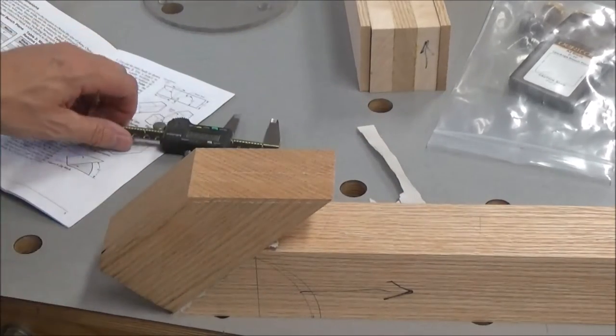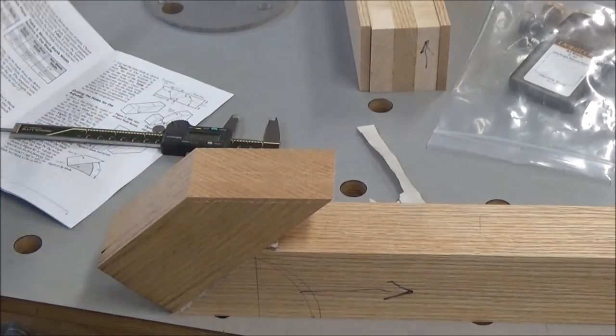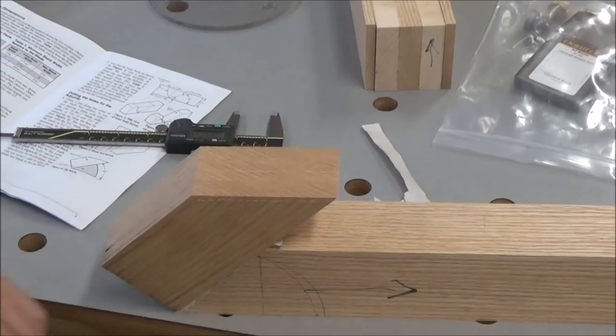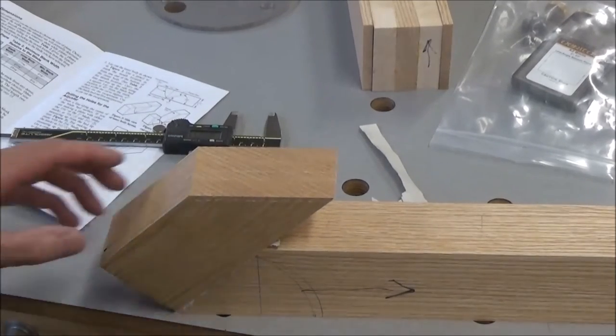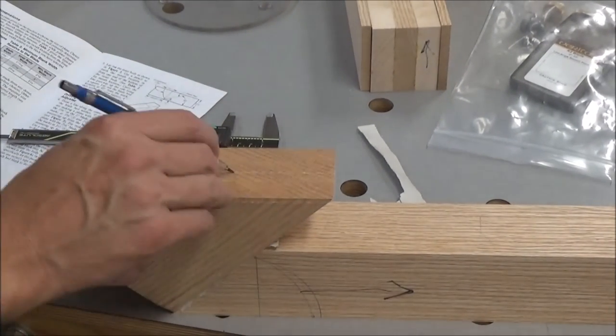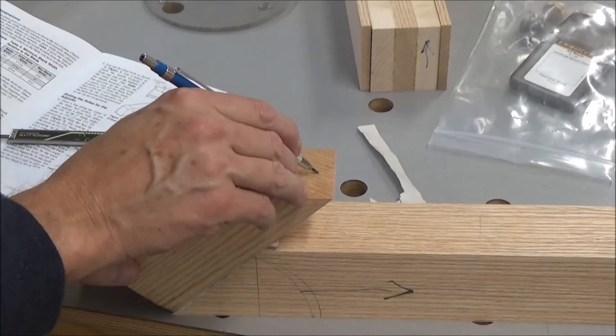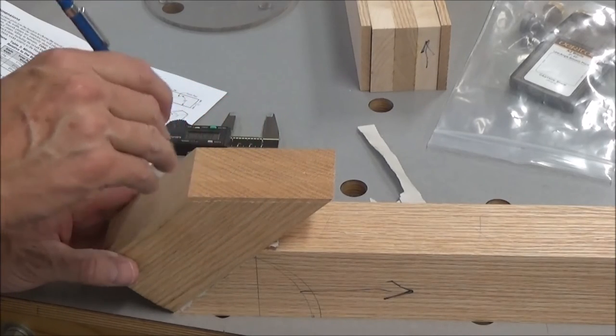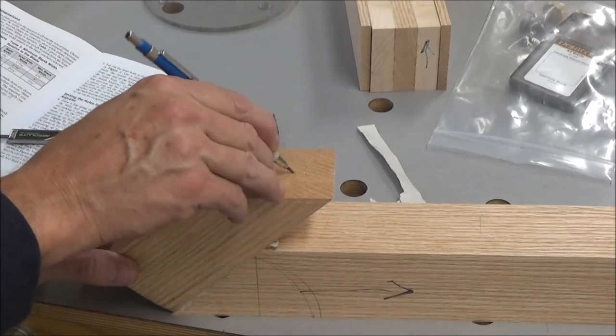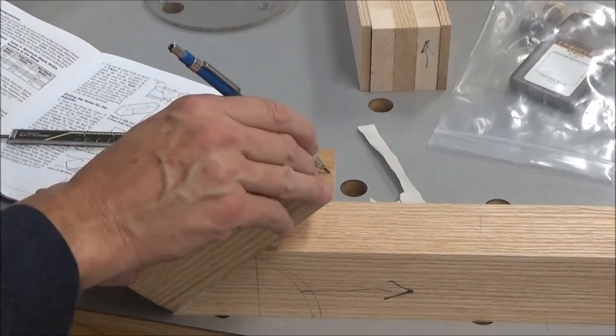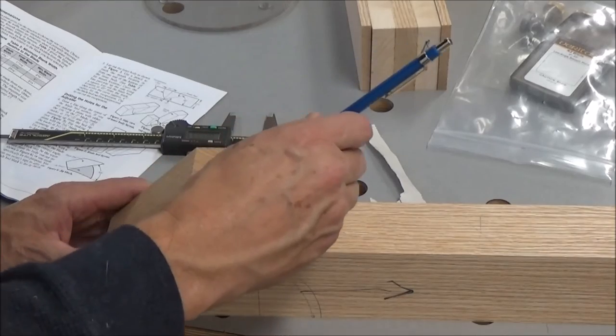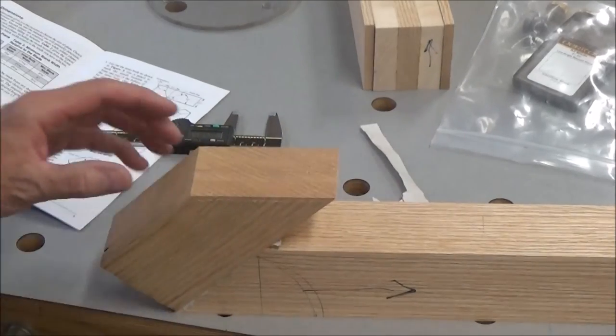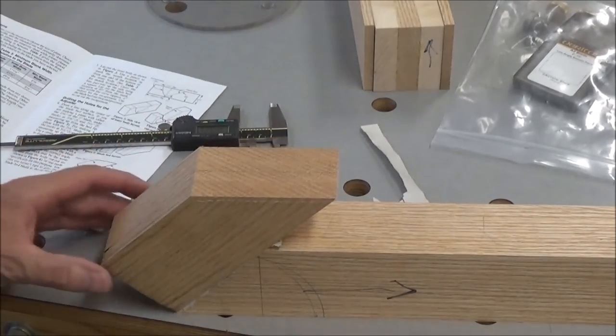I'll just go in the other direction to confirm that, and it is right on the money. So there's my center line. I'm going to get my pencil and darken that up a little bit. There's a nice little trough there, so now hopefully you can see that a little bit better.